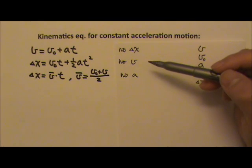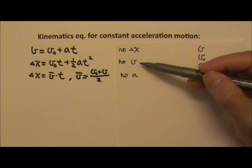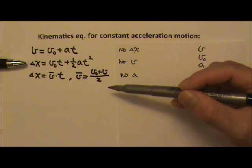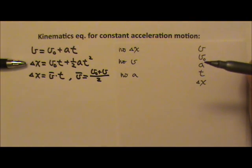This means if you see a problem that does not give you final velocity and does not ask you for the final velocity, this particular equation can be convenient to use. You plug in your three known values and you can find your answer in one step. Of course, it's also perfectly alright to use a combination of two equations to find what you need.